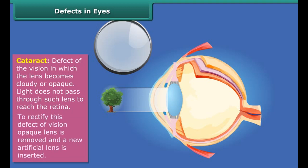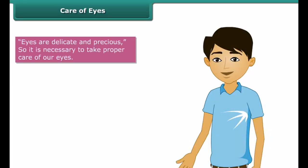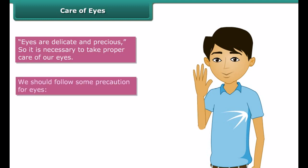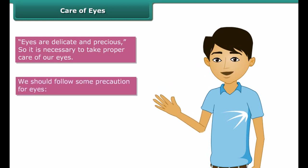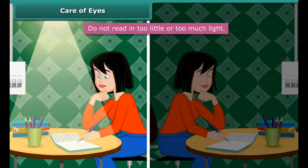Cataract is a defect of vision in which the lens becomes cloudy or opaque, and light does not pass through such a lens to reach the retina. To rectify this defect, the opaque lens is removed and a new artificial lens is inserted.